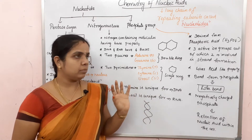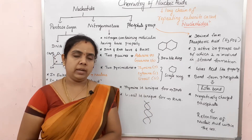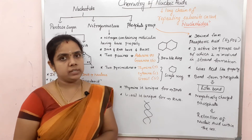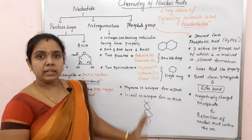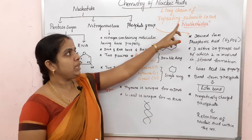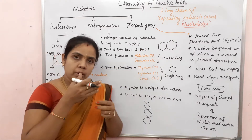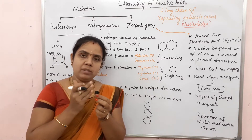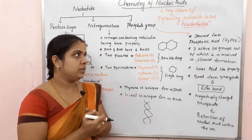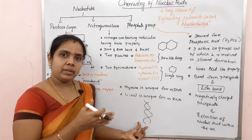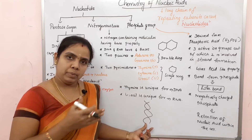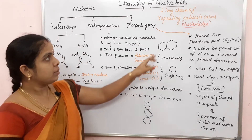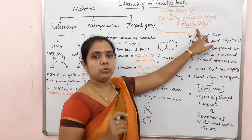It is a very easy topic - chemistry of nucleic acids. DNA is a long chain of repeating subunits. These subunits are like beads that repeat along the chain. What is the name of this subunit? Nucleotides.